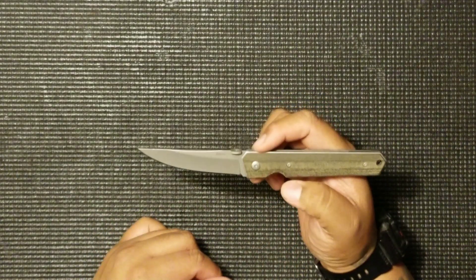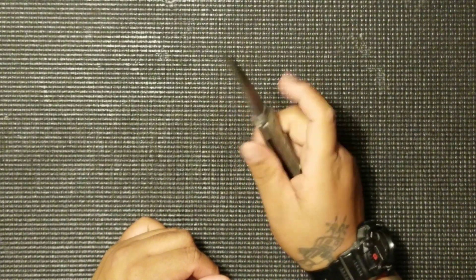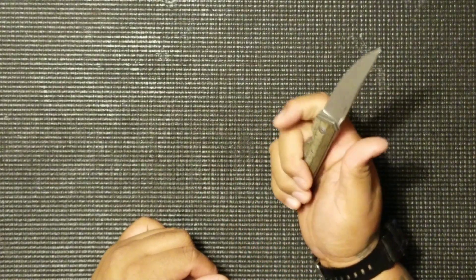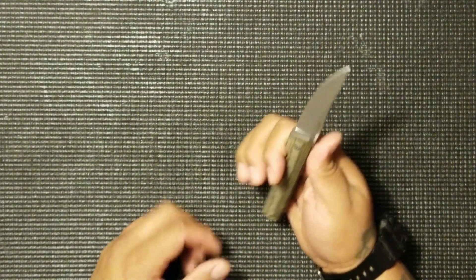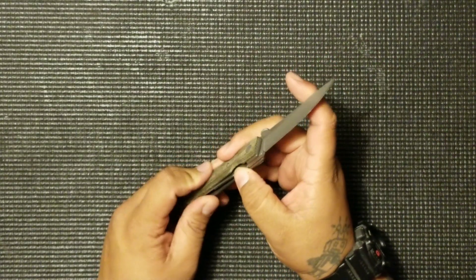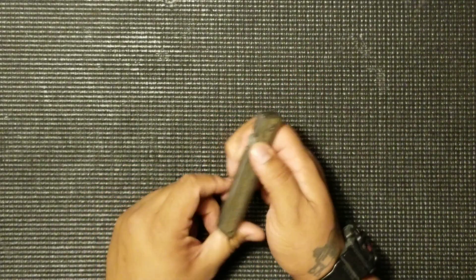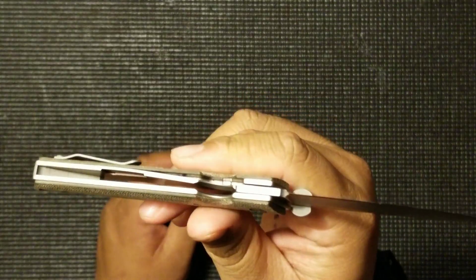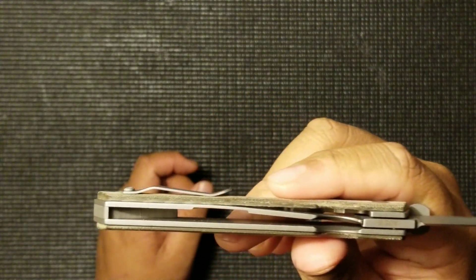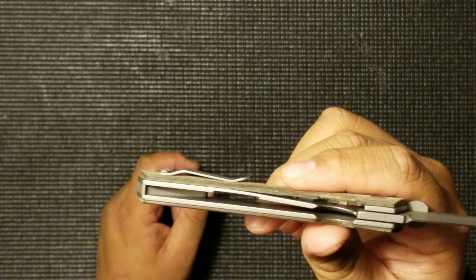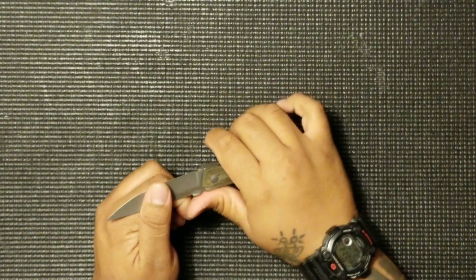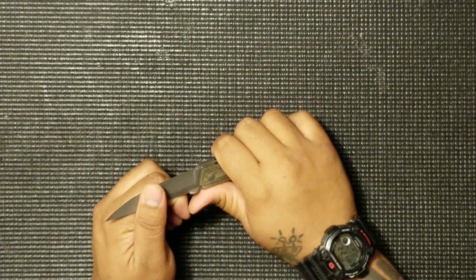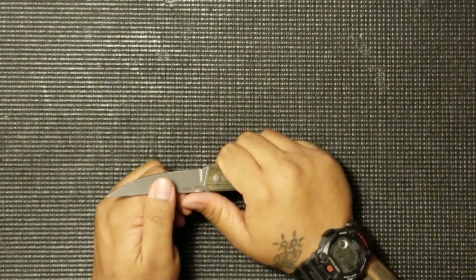But yeah, definitely has a nice factory edge on this guy. Feels good, it's sleek, it feels comfortable in the hand. Nice operating IKBS ball bearing system paired with that thumb disc, flies open, feels great. Solid lockup on that guy, absolutely rock solid lockup on that liner, so you have confidence that thing's not closing on you. Should you get into a crazy situation or even just using it for work, it's not going to close on you.